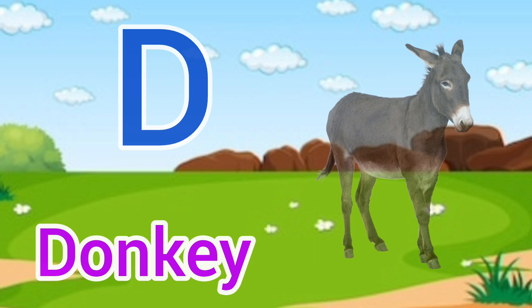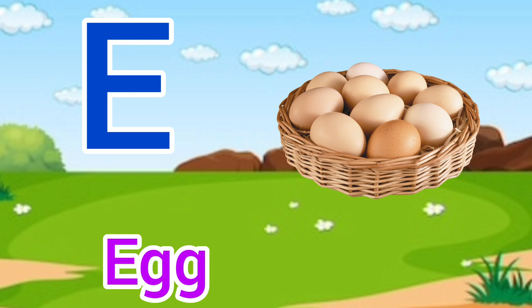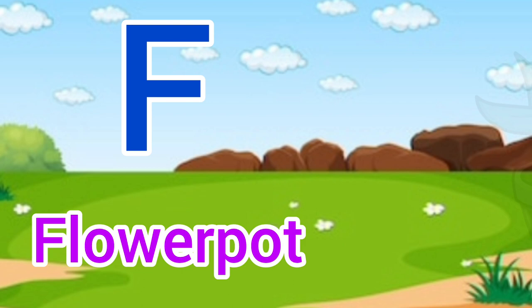E for egg, egg means anda. F for flower pot, flower pot means gamla.